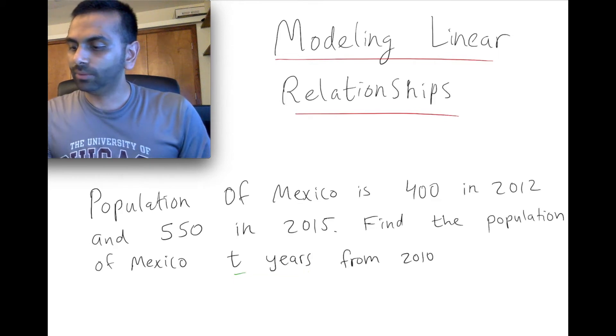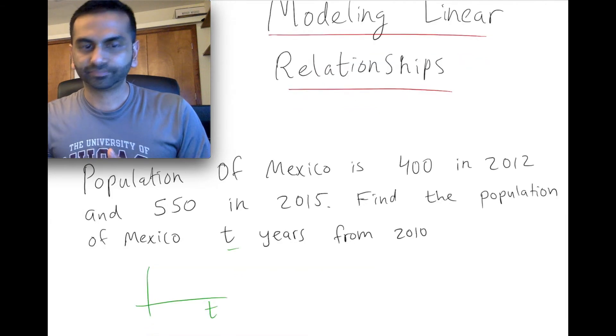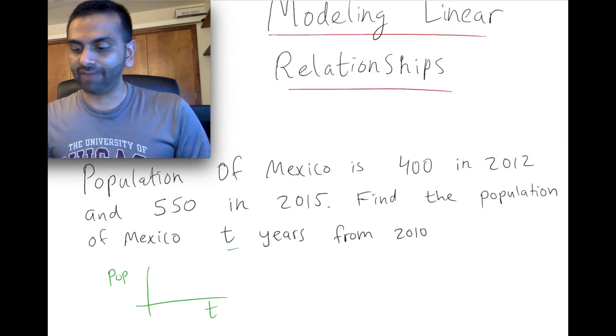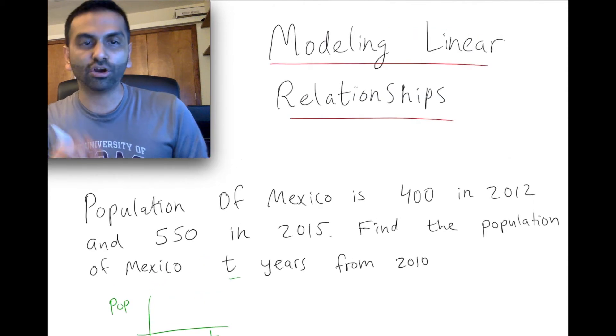If we were to graph this out, we probably would do something like, alright, T is our X-axis, and the Y-axis is the population. We could call it P or something. And really, it's like starting off with some value, and it's increasing by a certain amount. We're just trying to find that MX plus B, but the X is really called T here.